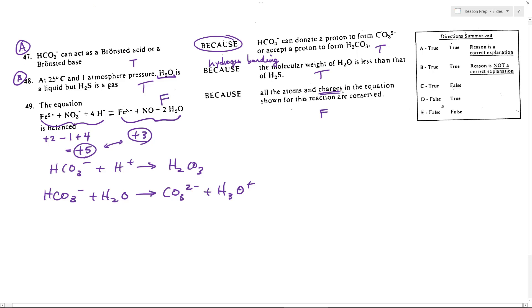This is false because the charges are not conserved. The charge here is plus five. The charge on the right is plus three. It's got to be equal. So this is a false, false. And so therefore number 49 is, oh, I write it here. 49 is E.